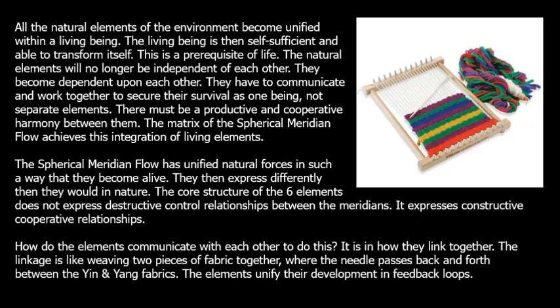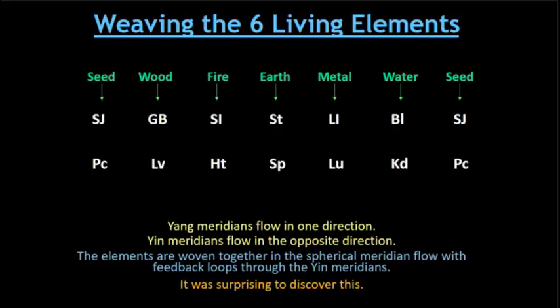I want to show you a special animation right now. I have the meridians lined up by elements — first seed: Sanjiao and pericardium; then the wood elements: gallbladder and liver; then the fire elements: small intestine and heart, and so on. The yang meridians are up above from Sanjiao, gallbladder, small intestine, all the way back to Sanjiao. Down below are the yin meridians from pericardium to liver to heart to spleen. The normal process of element order is seed to wood to fire to earth to metal to water to seed — that is how the elements generate each other, but that is among the yang meridians. Now we go to the yin meridians and see that this process goes in reverse.